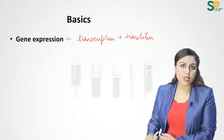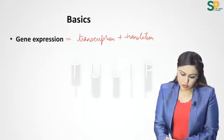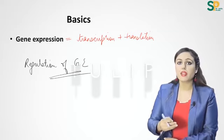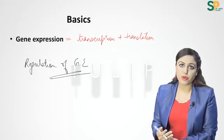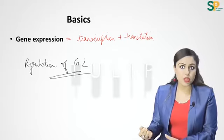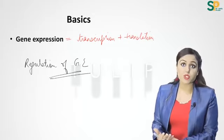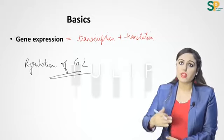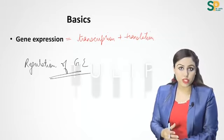Transcription is the formation of mRNA and translation is the formation of proteins. Regulation of gene expression means controlling which gene is active and which gene is inhibited — in which cell a gene should be inhibited, and in which cell it should be activated.